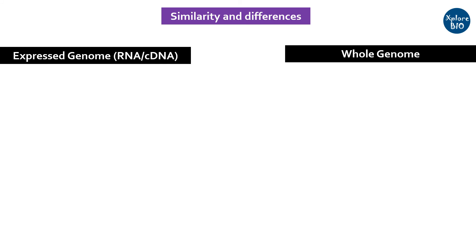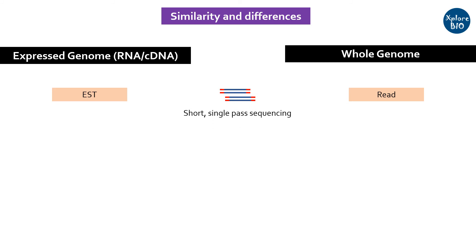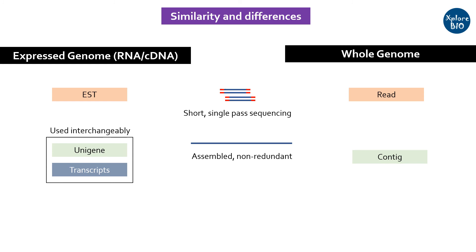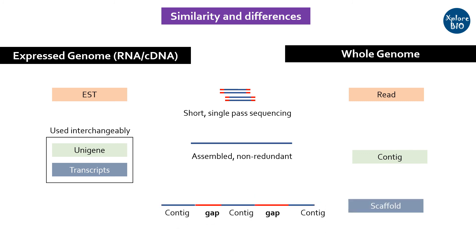Now let's see how all these terms are related to reads, contigs and scaffolds. ESTs are similar to reads in the sense that they are short and sequenced in a single go, but the major difference is ESTs represent only the expressed region of the genome, while reads may belong to the expressed or unexpressed region. Similarly, transcripts and contigs are similar in that both are non-redundant and assembled from shorter sequence reads or ESTs, but transcripts always represent the expressed part of the genome while contigs may represent expressed or non-expressed parts. Scaffolds are chained contigs that represent much larger chromosomal DNA or its portion and may contain gaps.